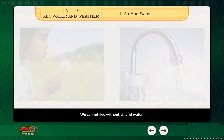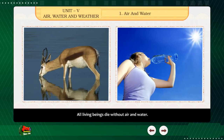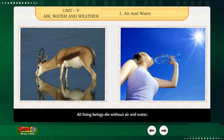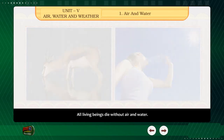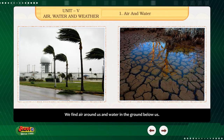We cannot live without air and water. They are necessary for living. All living beings die without air and water. We find air around us and water in the ground below us.